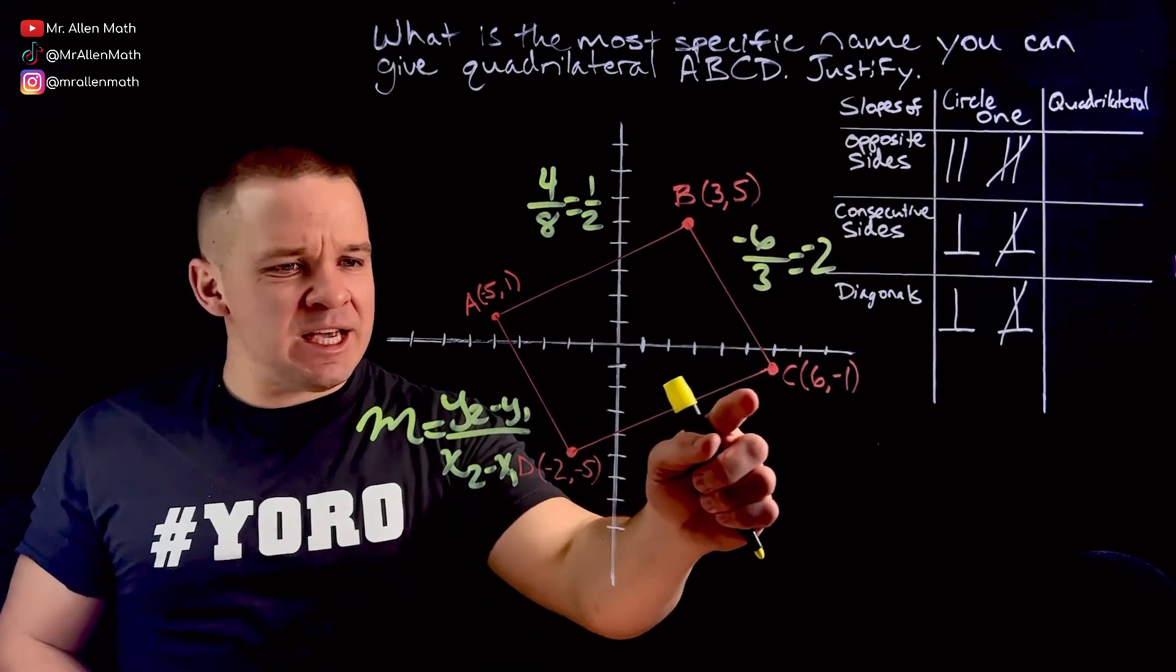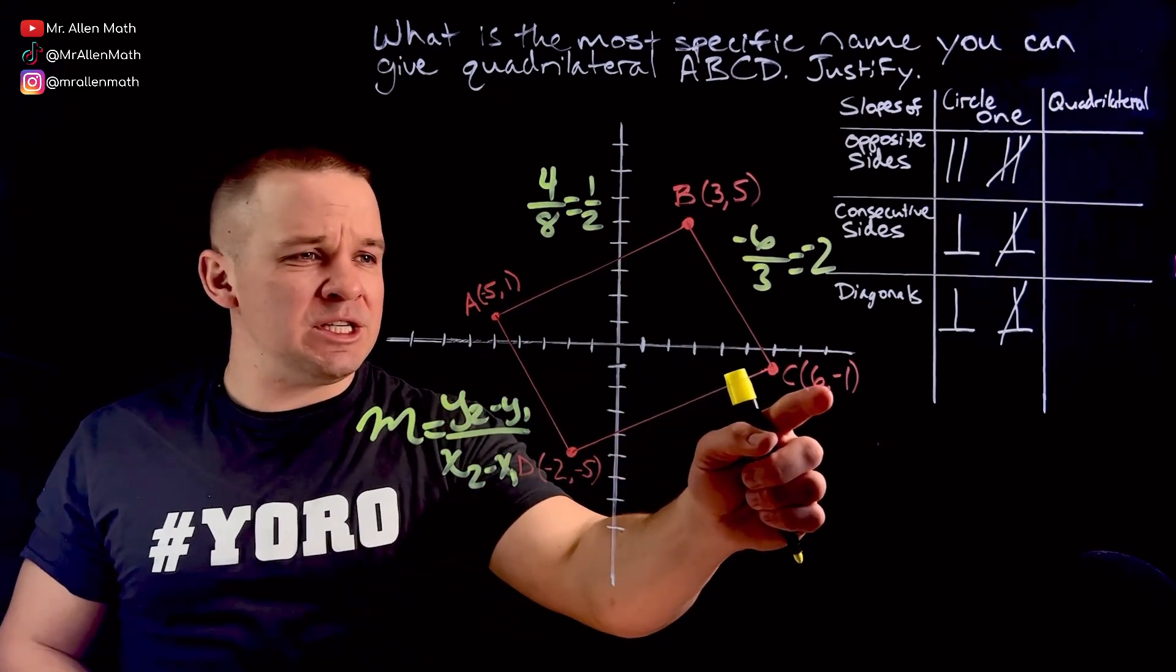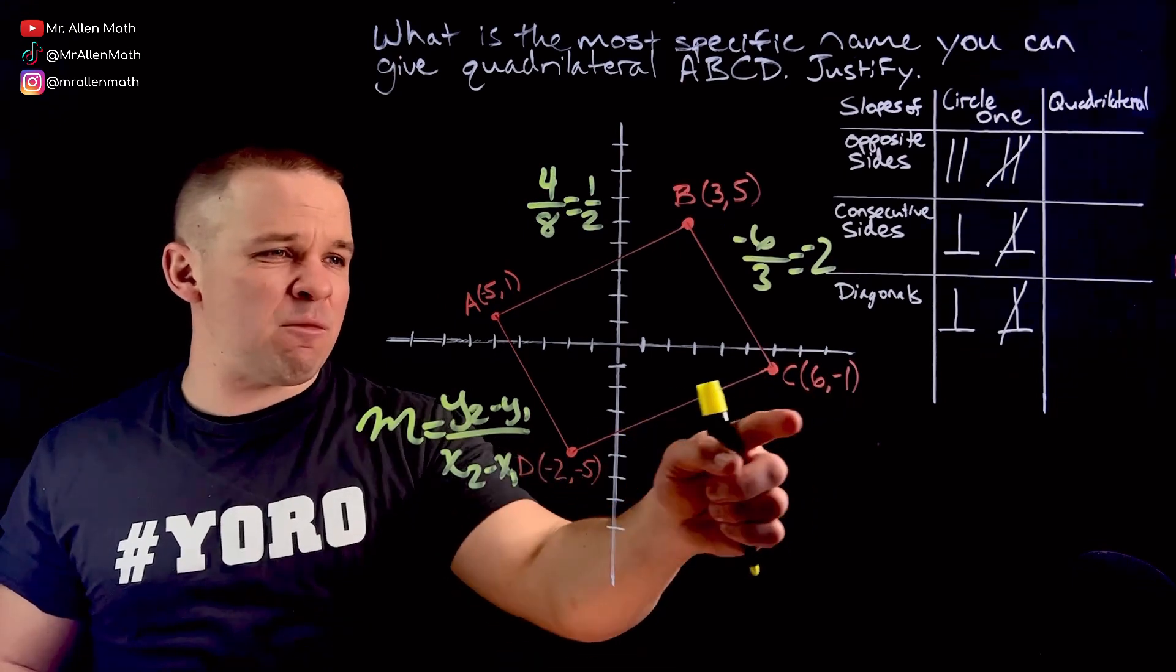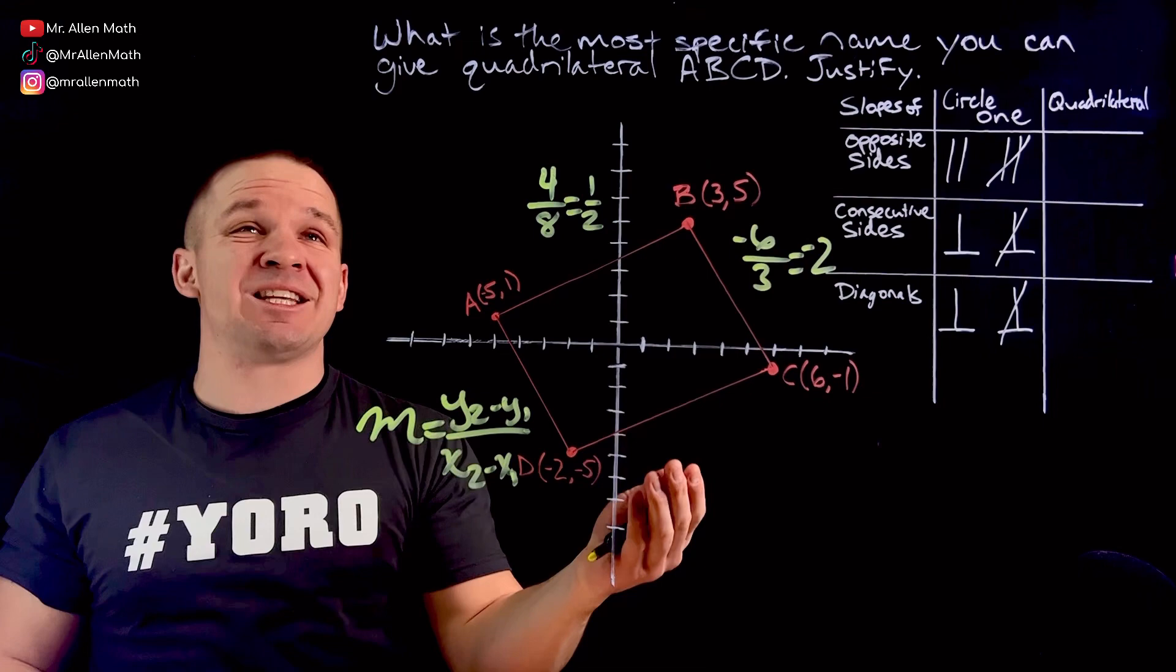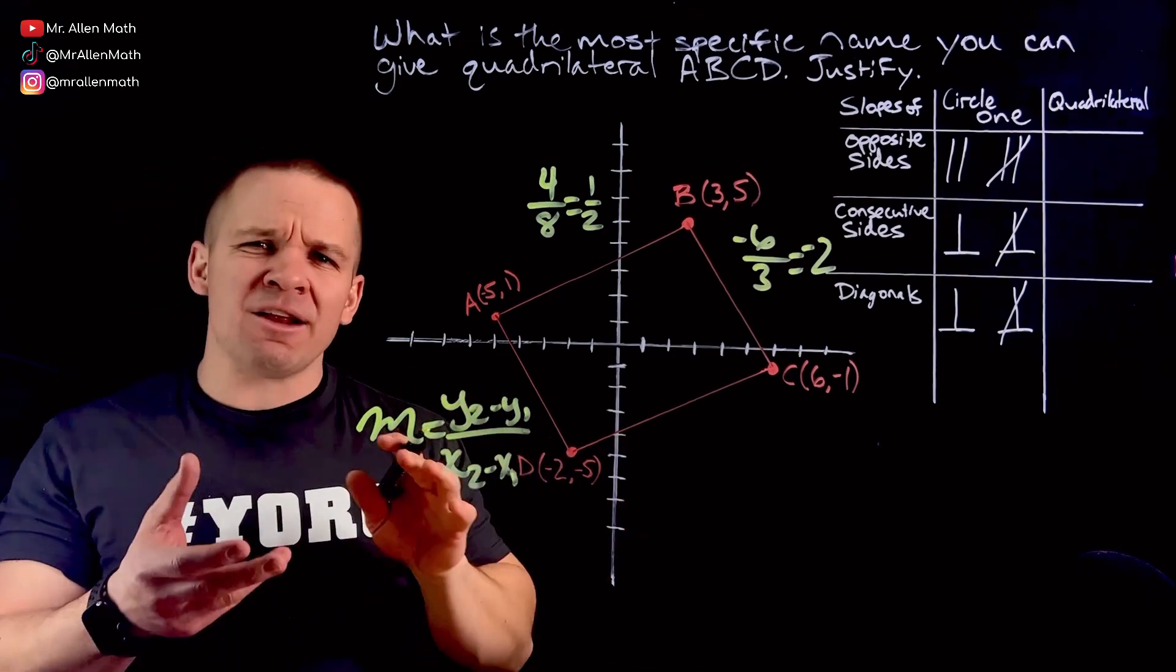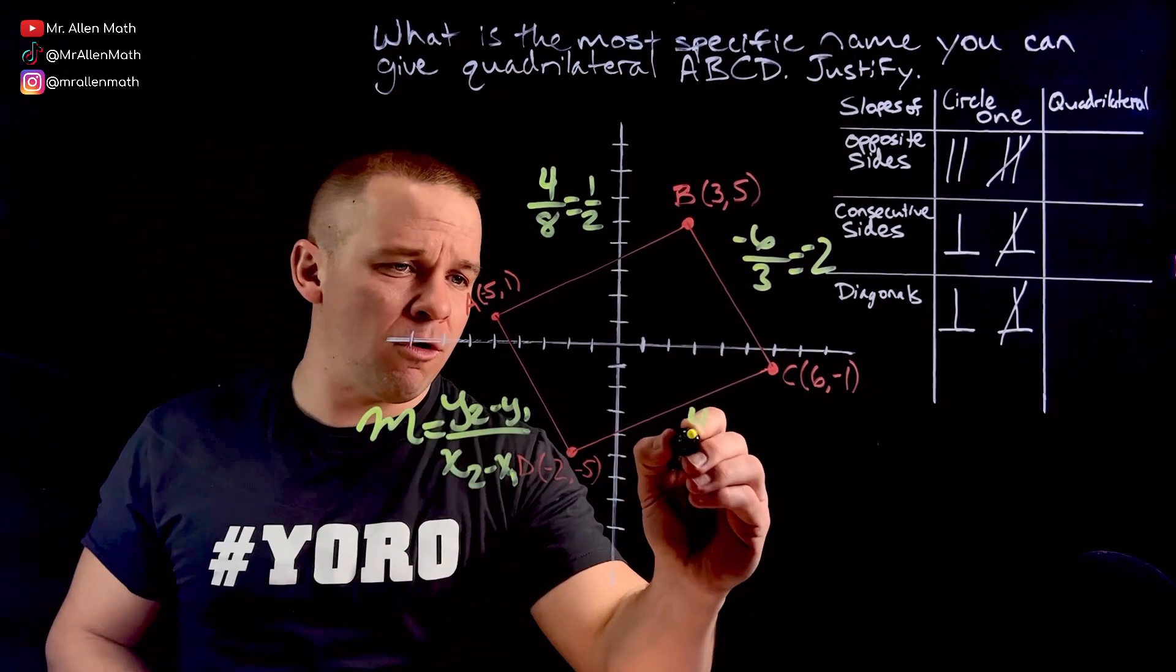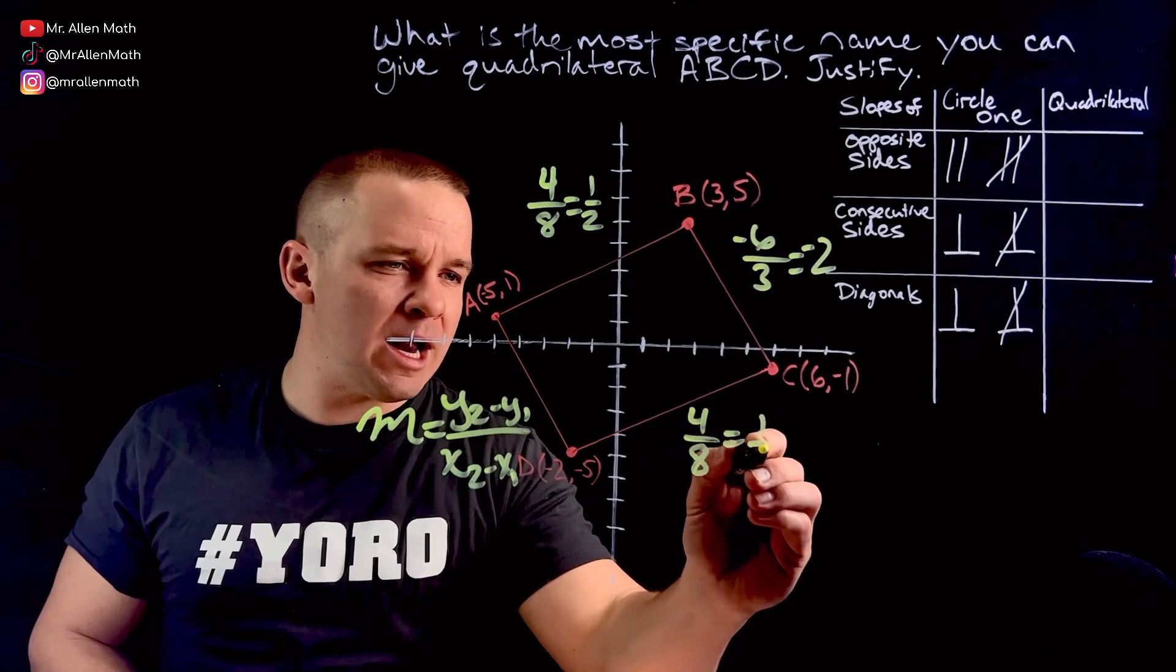Next one, I got from C to D. So I'm going from negative 1 to negative 5, I'm going down 4. And then I'm going from 6 to negative 2, that's to the left 8. So negative and negative is going to give me a positive. So I've got 4 over 8 equals 1 half.